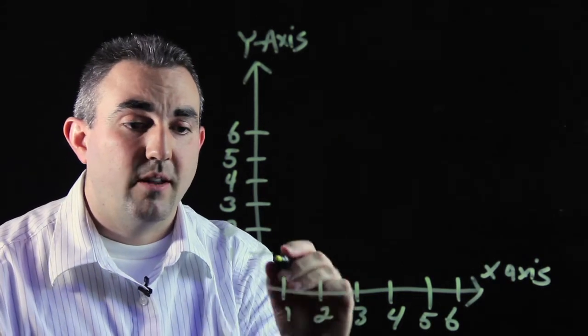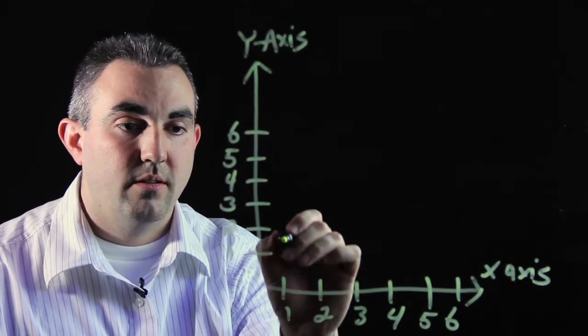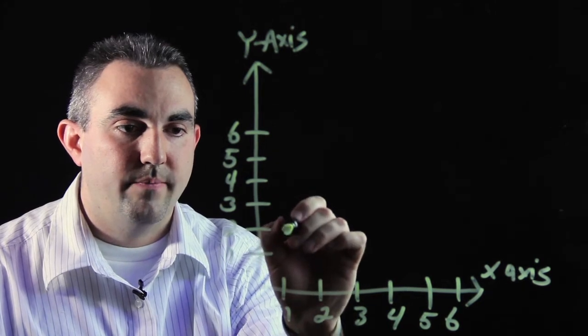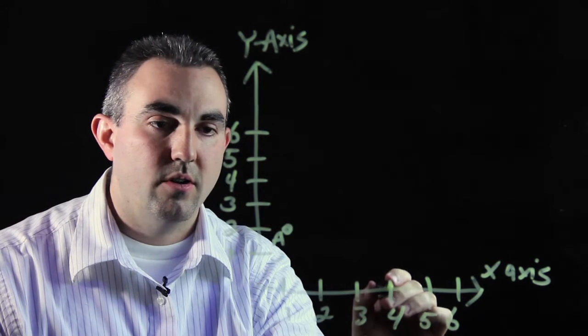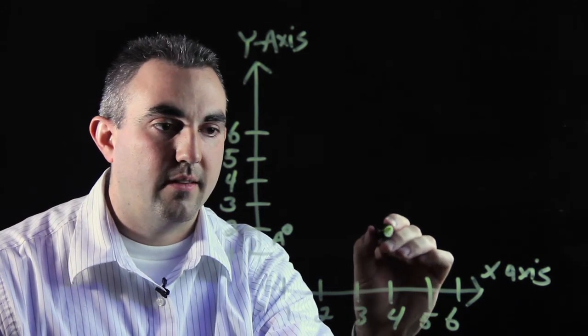Our first point is going to be one, two. So one over, two up. That's going to be point A. Four, two. Four over, two up. That's going to be point B.